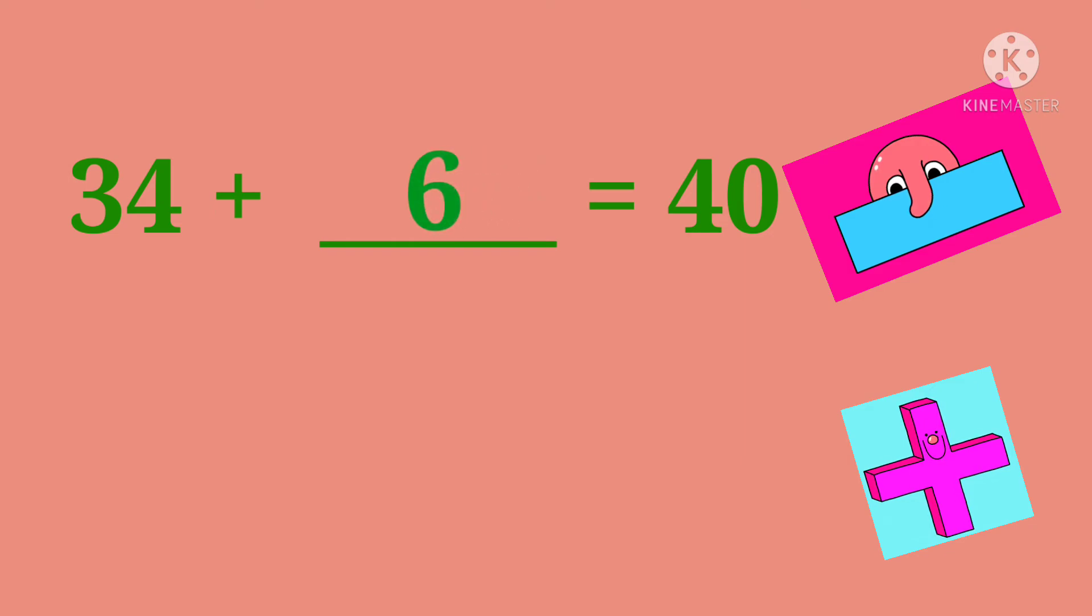Now, 94 minus blank is 85. Start counting after 85 and open your fingers: 86, 87, 88, 89, 90, 91, 92, 93, 94. I opened nine fingers, here the answer is 9.